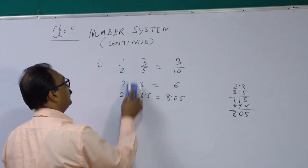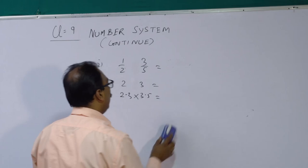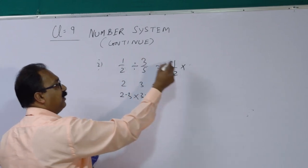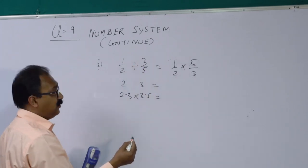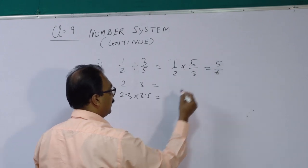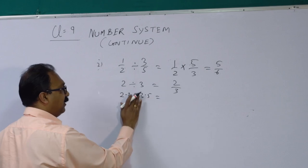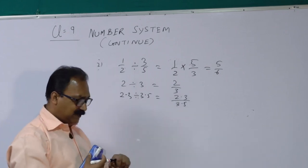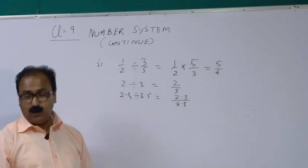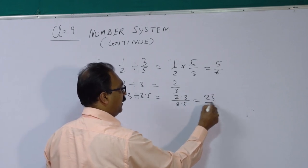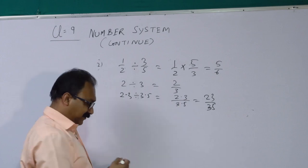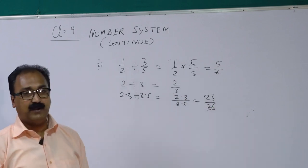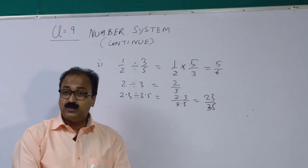Now division of two rational numbers. 1/2 ÷ 3/5: when dividing, multiply by the reciprocal, so 1/2 × 5/3 = 5/6, which is rational. For 2.3 ÷ 3.5: since both have one decimal place, we can ignore the decimals and get 23/35, still rational. So division of two rational numbers is also a rational number.